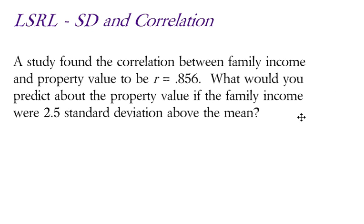Here's another common example you may see when talking about correlation. Here's a question. A study found the correlation between family income and property value to be r = 0.856.